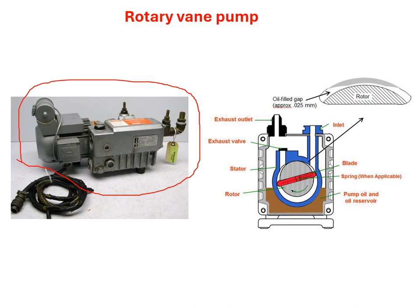In this rotary vane pump we can see that basically you have two units — one unit on the left-hand side and the other unit on the right-hand side. In the first unit, this is connected with the power supply and inside this we have a motor. In the second unit we have all the circuitry which actually helps us to produce the vacuum. You have an inlet here and an outlet here. When we connect this inlet from the chamber, all the gases from the chamber go inside this pump and are then pumped out from the outlet.